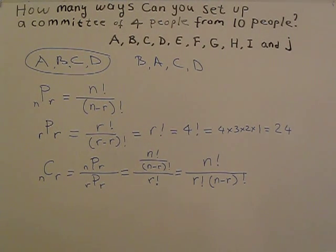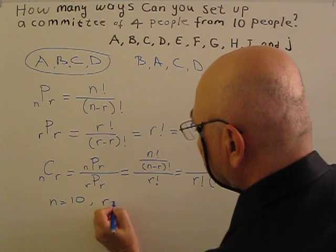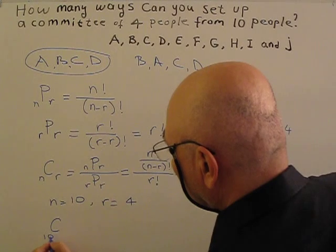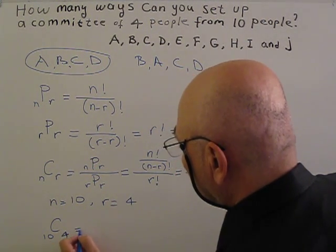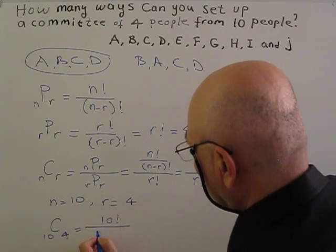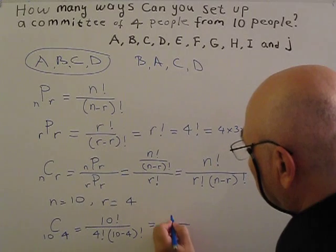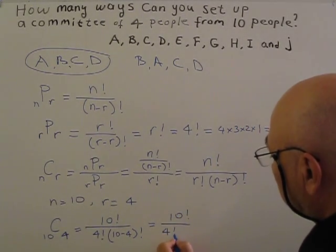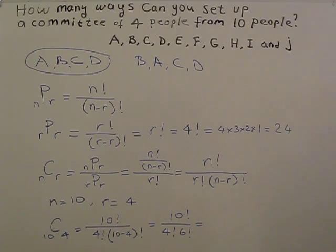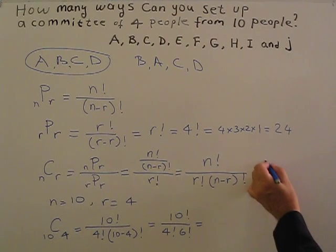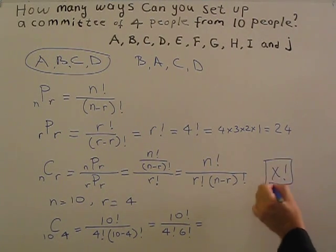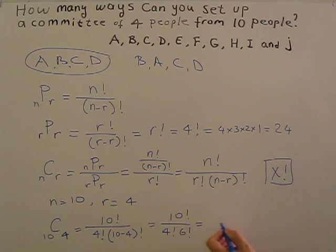If we apply this formula for our problem, for our problem N is 10, R equals 4. So C 10, 4 equals 10 factorial over 4 factorial times 10 minus 4 factorial. Basically, 10 factorial over 4 factorial times 6 factorial. So if you have factorial notation in your calculator, basically like this, then you can enter 10 factorial divided by 4 and 6 factorial. Then you will get 210 for the answer.